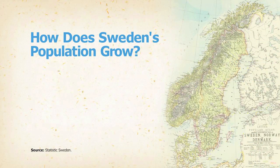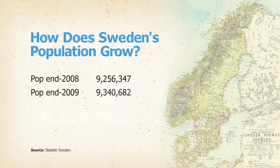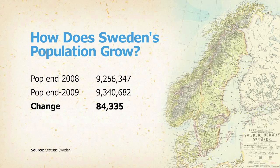But first, let's see how the whole thing works together — births, deaths, and migration. We'll use the example of Sweden, a country with very good statistics. According to Statistics Sweden, at the end of 2008, the population was 9,256,347. At the end of 2009, it was 9,340,682. So Sweden grew — simple math — 84,335 in 2009.